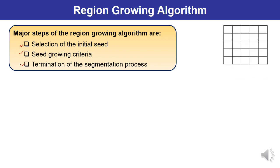A 5x5 grid is shown here. The first step is selecting the initial seed point. Once the seed is selected, seed growing is done in four directions: up, right, down, and left. As this region grows, further neighboring regions can also be grown accordingly. An example will be discussed to help you solve related questions.